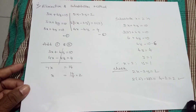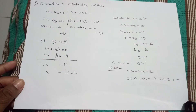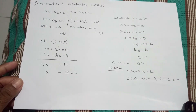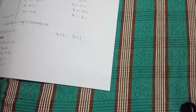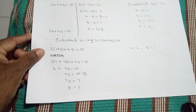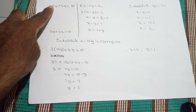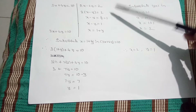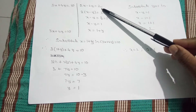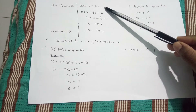This is the way we do the elimination method. Now, for every bit in the first problem, they are asking us to do both methods — elimination method and substitution method. So let us go to the substitution method. The equations are 3x plus 4y equal to 10 and 2x minus 2y equal to 2.